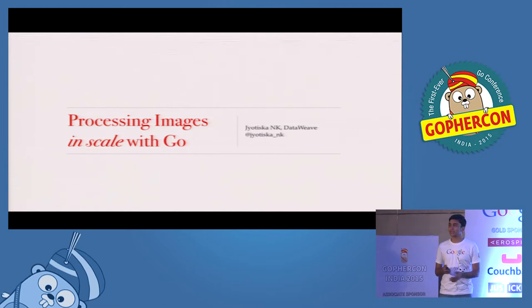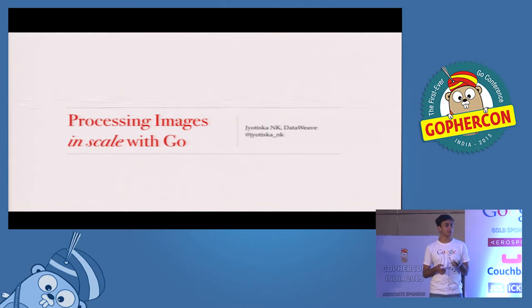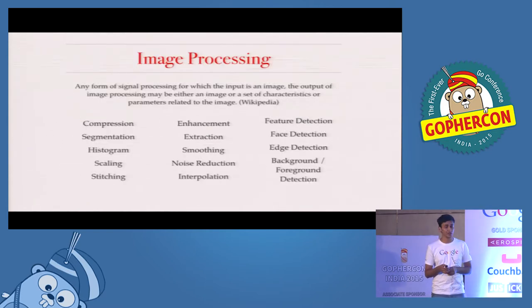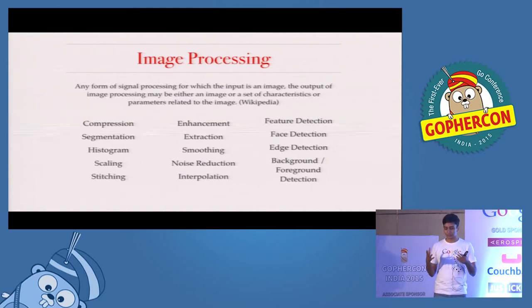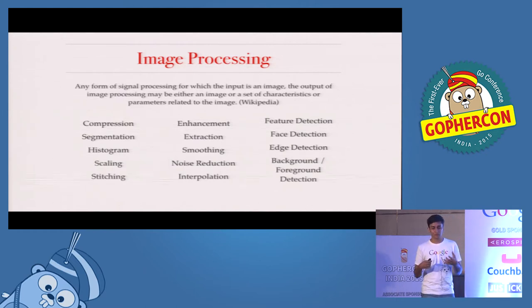So different image processing libraries that are available for processing 2D images. Image processing — this definition has been taken from Wikipedia — is where the input is an image, you do some processing on it, and you give an image as output, or a set of features or parameters related to the image as output.